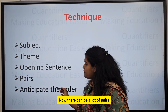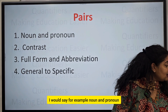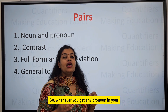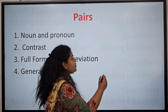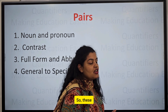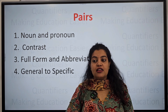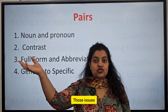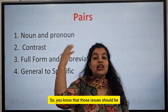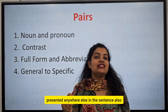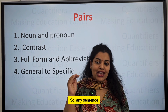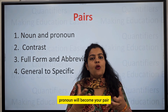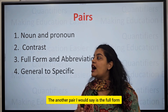Next, look for pairs. There can be many types of pairs — noun and pronoun is very important. Whenever you get a pronoun in your para jumble sentences, always highlight it. For example, one sentence might say 'he' — you need to find who 'he' refers to. Any sentence containing the noun that the pronoun refers to will become your pair or block.